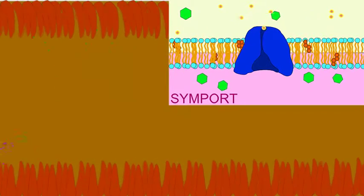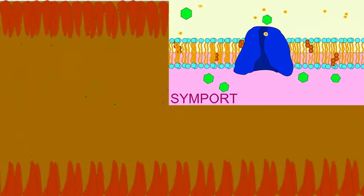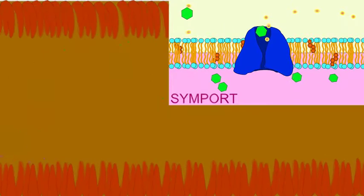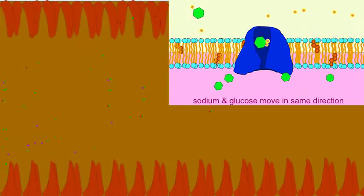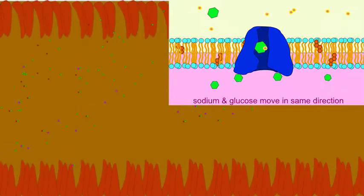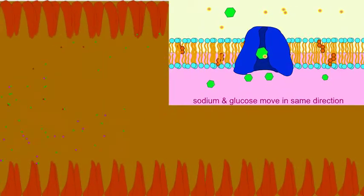This is a symport with sodium, in a process in which sodium ions are allowed to enter the intestinal cells if glucose or galactose accompany them.